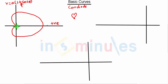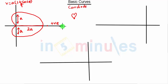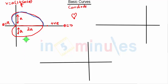It is not a perfectly shaped heart but similar to one. This length will be 2a, this length will be a, and this length will also be a. Theta here will be 0 and here will be π. The length of this curve starts from this point and goes till here, so theta is 0 to π. This is r = a(1 + cos θ).